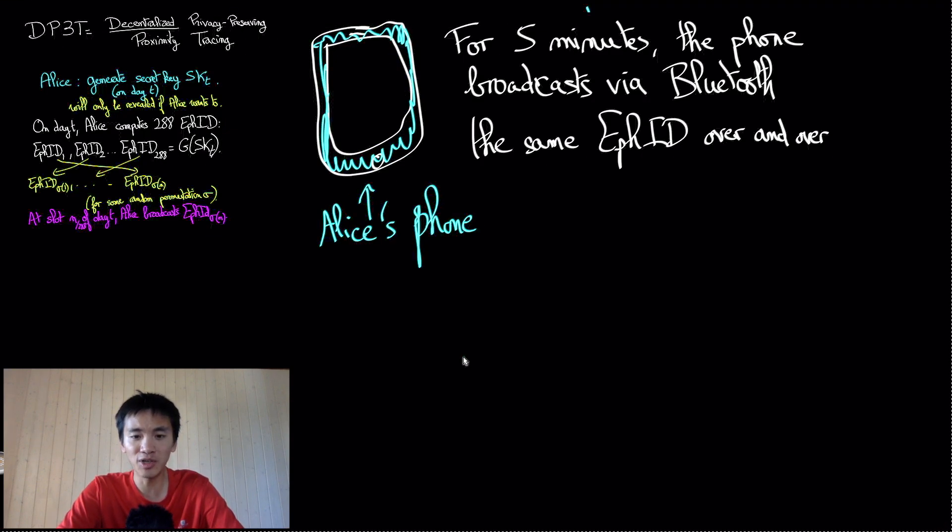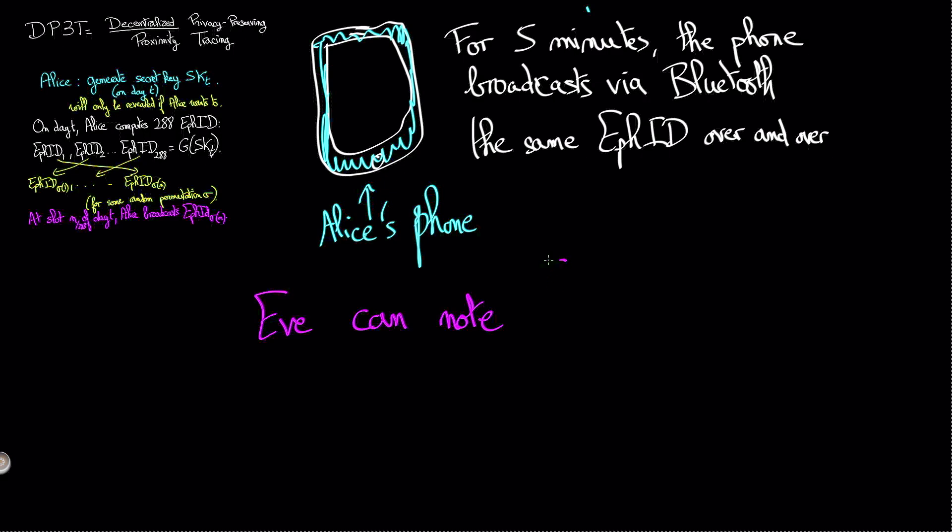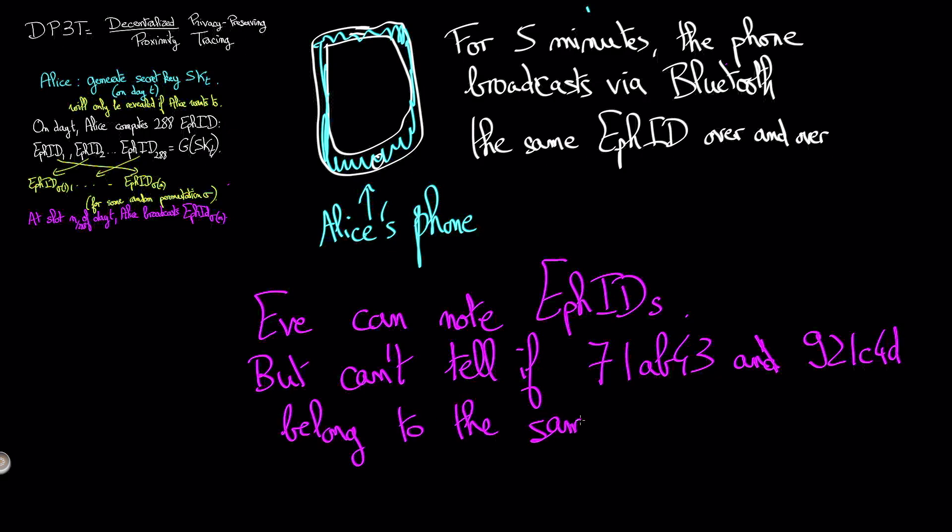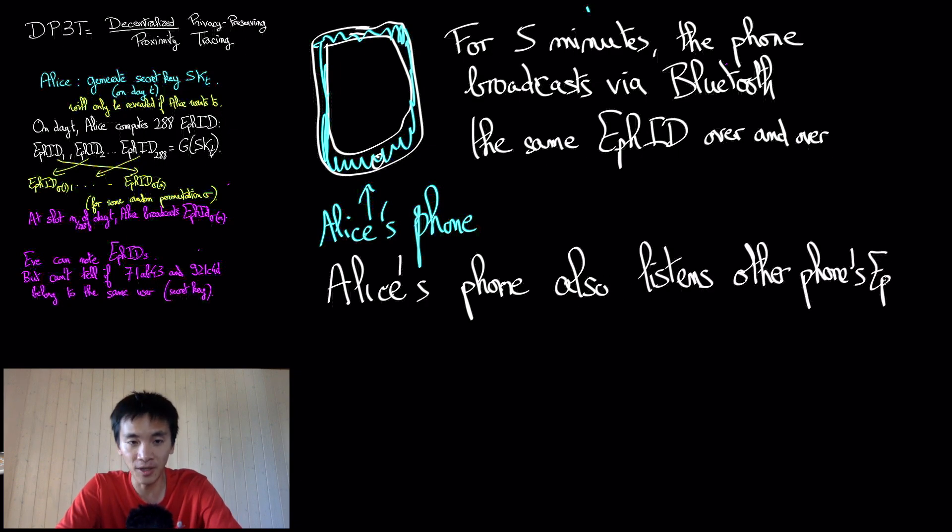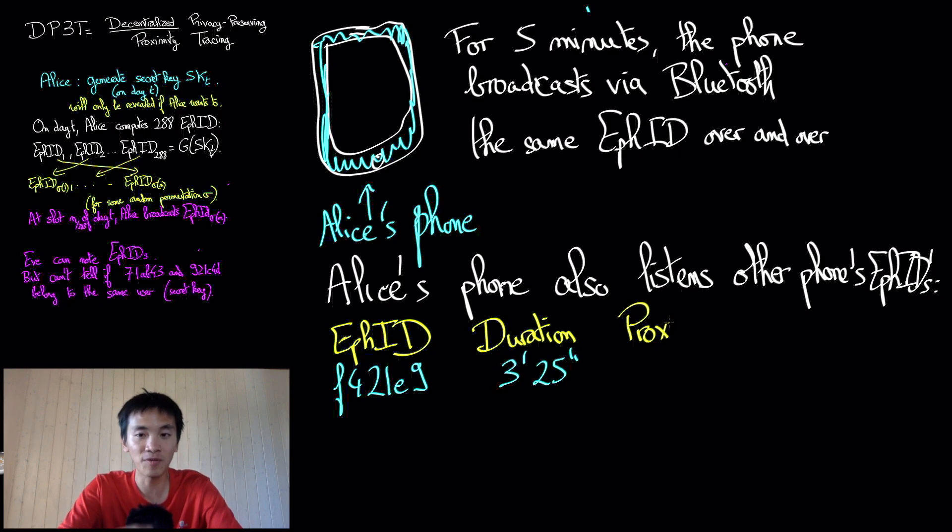Note that because of the pseudorandom generation of identifiers, unless Eve knows Alice's secret key SKT, she will be unable to know that Alice's different ephemeral identifiers correspond to the same secret key SKT, as all ephemeral identifiers will appear random to Eve. In addition to broadcasting, Alice will also be listening to other phone's ephemeral identifiers. This allows Alice to compile a list of ephemeral identifiers she has been in proximity with. For each contact with an ephemeral identifier, Alice will also note the duration of the contact,